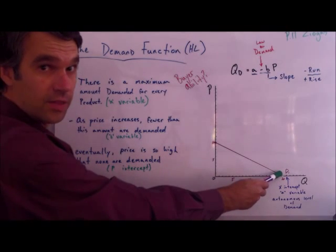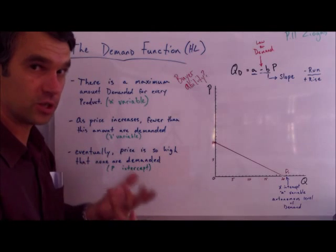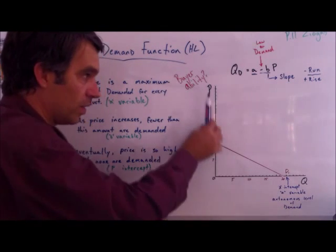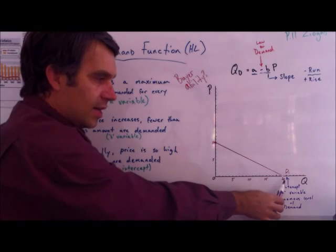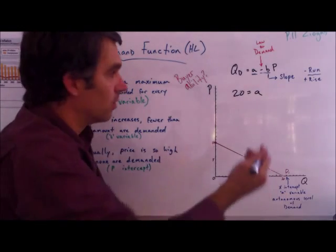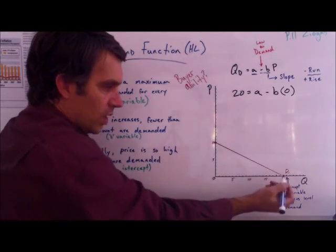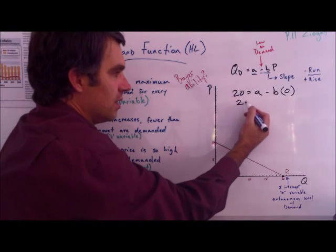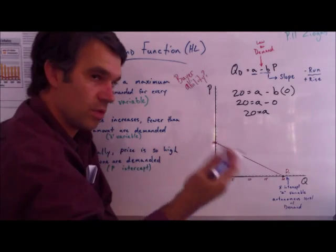Let's solve for the 'a' variable first. We can see it's 20 from the graph, but let's solve for it anyway. What we know about the 'a' variable is that it's some positive quantity — we just don't know what — at a price of zero. In this case, quantity demanded is 20, so: 20 equals 'a' minus 'b' times 0. Since anything times zero is zero, 20 equals 'a'. So the 'a' variable is 20.